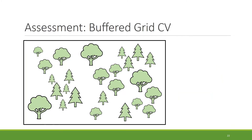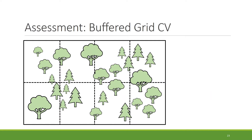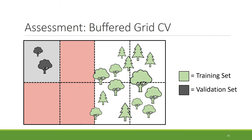Now let's look at assessment methods that incorporate these ideas. The first method is buffered grid cross-validation. We lay down a grid on our spatial data — we can control the size of this grid, like how we control k in k-fold cross-validation. Then for each cell, we pick the cell and use adjacent cells as buffer regions. A single fold of buffered grid cross-validation looks like this: we train on the training set, validate on the validation set, and repeat for each cell, averaging the results — much like k-fold cross-validation.